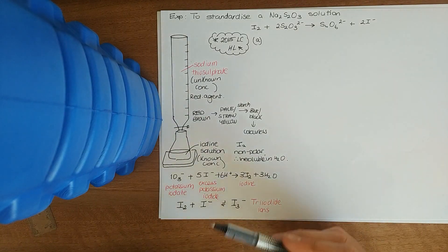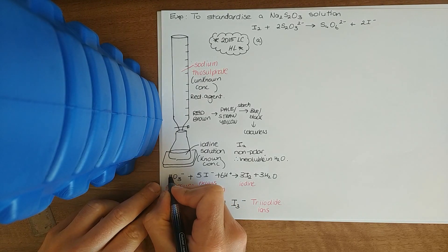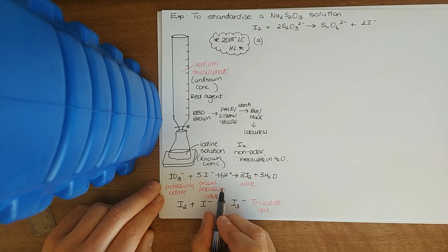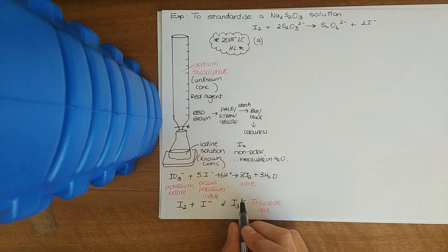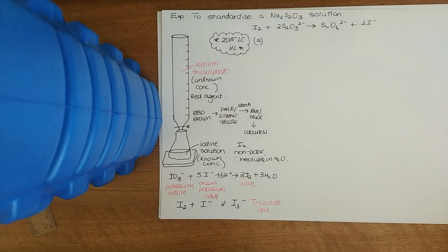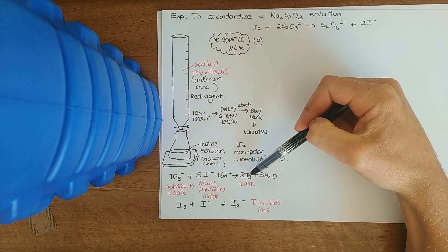We make up an iodine solution. To make up this iodine solution in the conical flask, we use a substance known as potassium iodate, KIO₃. You might see it written as excess potassium iodide. We use dilute sulfuric acid, and then you've got your iodine solution being produced — your I₂ solution. The color of I₂ is red-brown, so that's why the initial color is red-brown: because you're producing your iodine.